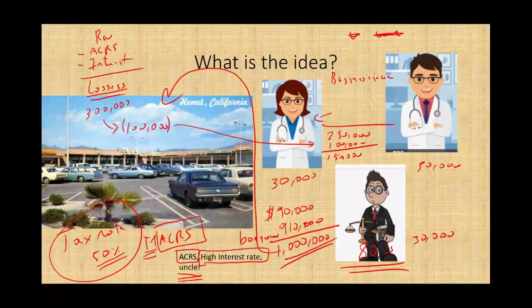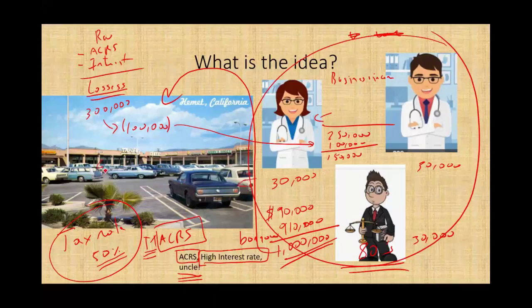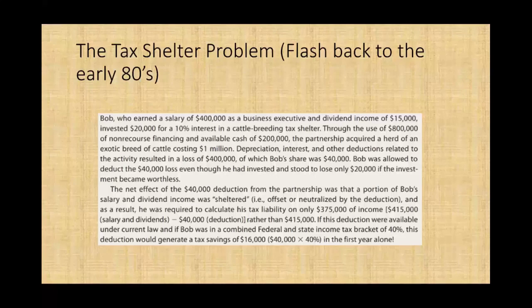So you can see the problem — it's a tax shelter. Congress said, hold on, we need to do something about this. This is where the whole idea of at-risk limits and passive activity losses comes into place. Now after two or three years, the investors would sell the strip mall and have a capital gain. Capital gain is taxed lower than ordinary income, so they'd lower their ordinary income and then turn around and sell, or exchange the business and not pay taxes. Congress said we need to stop this, because people were losing faith that wealthy individuals were avoiding paying taxes.